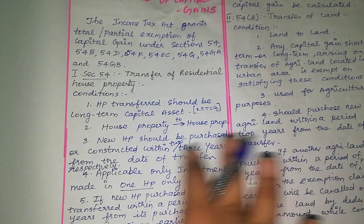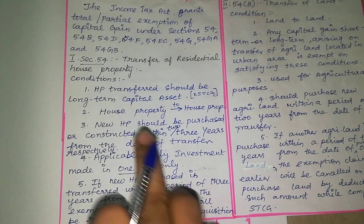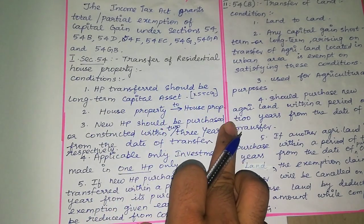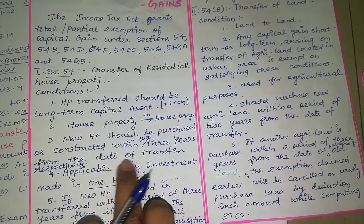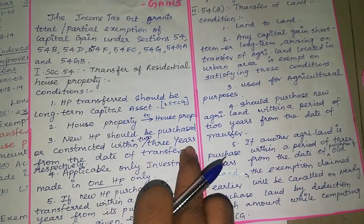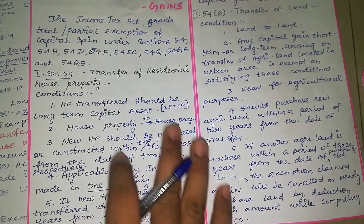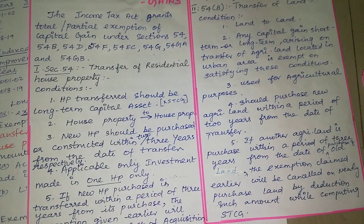If we have a house property, we can claim this section. Within 2 years, we must acquire a new house property, or within 3 years, we can construct a house property. That is why we apply this section. Under Section 54, the asset transferred must be a residential house property, and the investment must also be made in a house property.